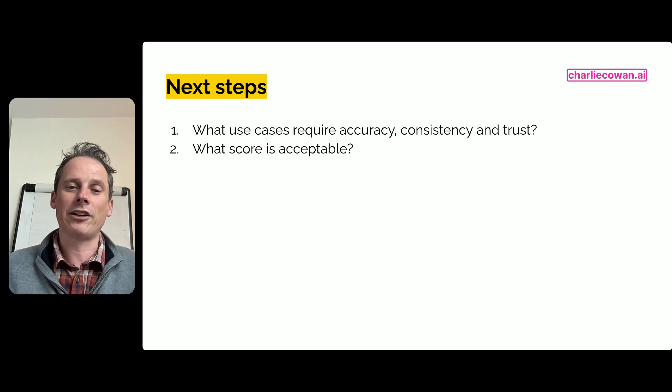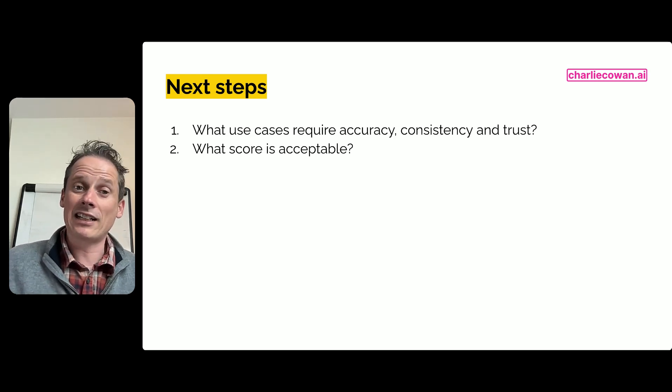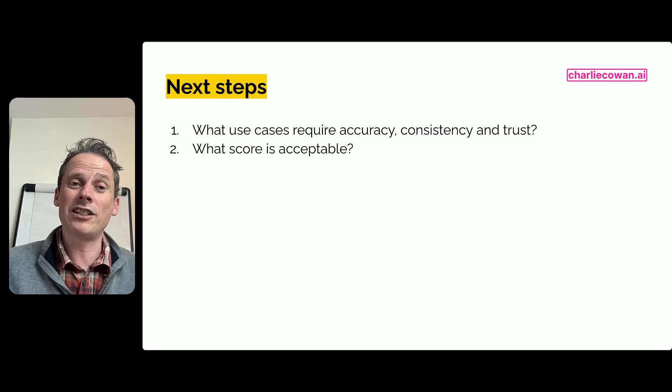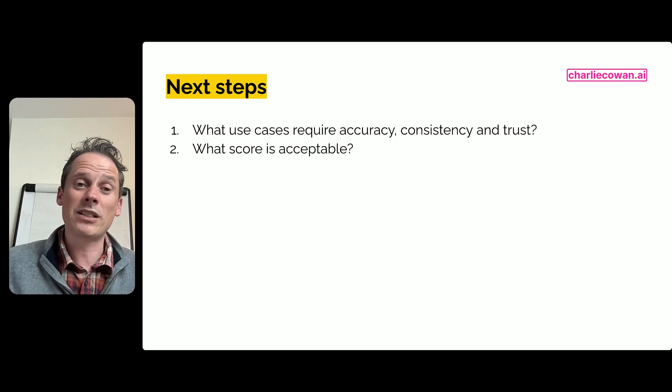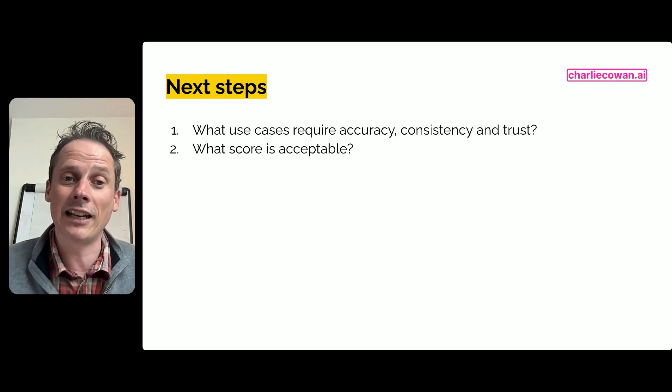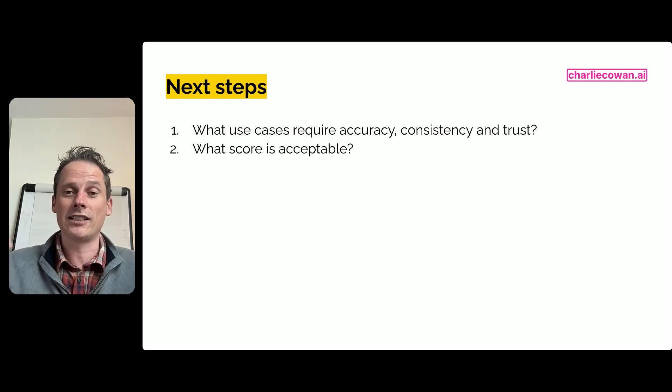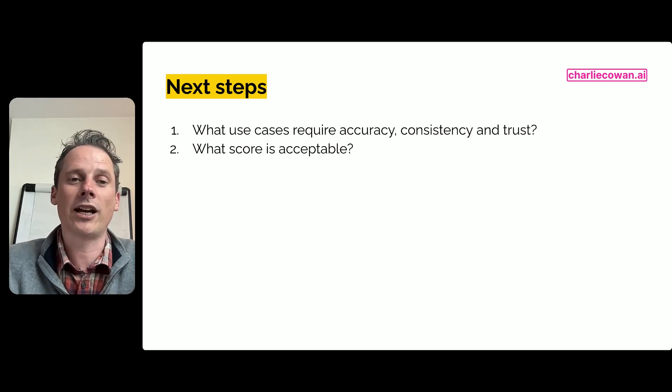Secondly, think about what score is acceptable. I said earlier we need 100% accuracy, but is that exactly correct? What kind of accuracy do you have on your human categorization today? Is 95% acceptable? Is 70% acceptable for certain use cases to bring it behind the jagged frontier?